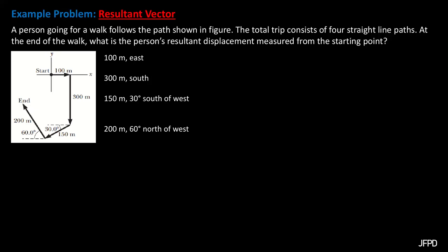In this lesson, I will discuss how to solve for the resultant of a vector. For our problem, a person going for a walk follows the path shown in the figure. The total trip consists of four straight line paths.